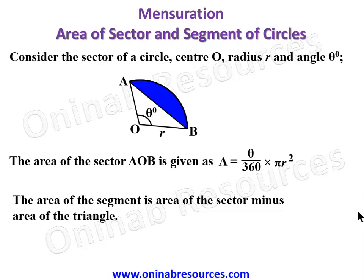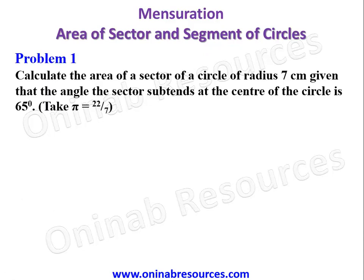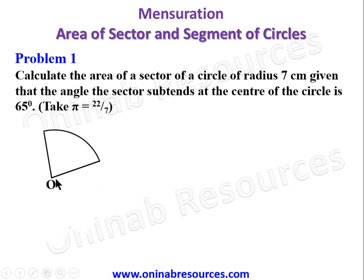We take our first problem. Problem 1: Calculate the area of a sector of a circle of radius 7 centimeters, given that the angle at the center of the circle is 65 degrees. Take π to be 22/7. We draw the sector with center O, angle 65 degrees, and radius 7 centimeters.